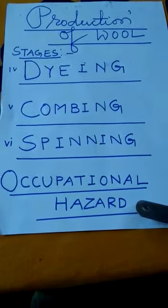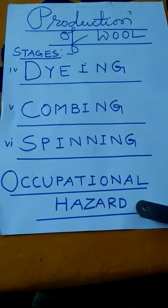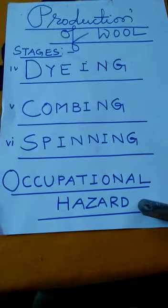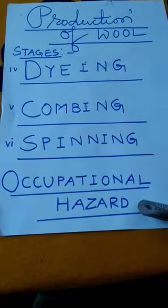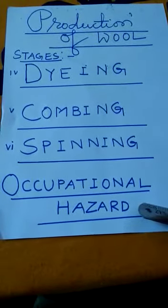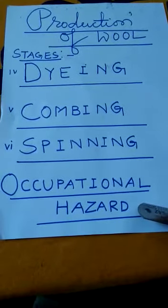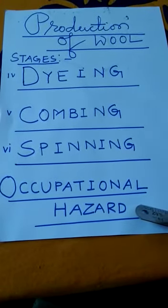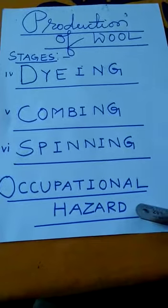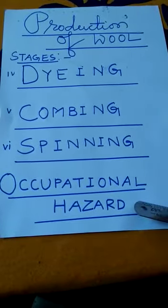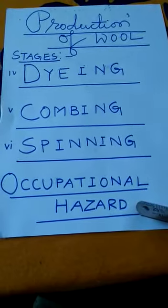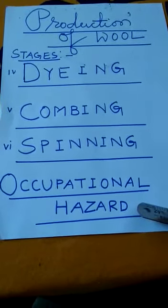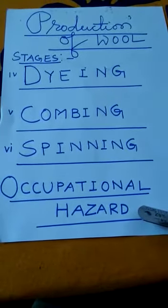So, during yesterday's class and today's class, we discussed how wool is obtained from sheep. The different stages of getting wool from sheep were shearing, scouring, sorting, dyeing, combing, and spinning. After passing through all these stages, we get wool to knit sweaters and shawls. We also discussed the occupational hazard that people in the wool industry face, which is sorters' disease.